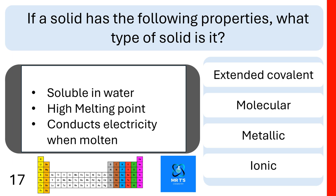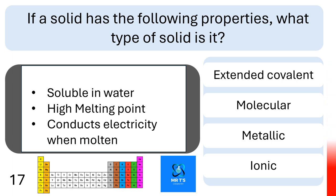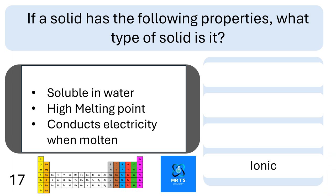Question seventeen: if a solid is soluble in water, has a high melting point, and conducts electricity when molten, what type of solid is it? Is it extended covalent, molecular, metallic, or ionic? This is an ionic solid.